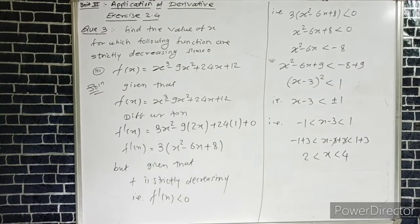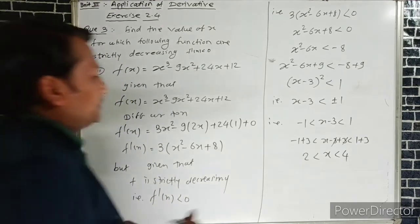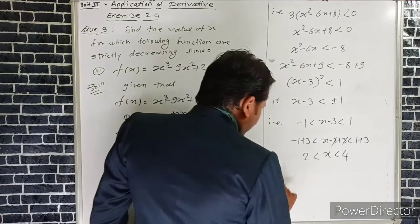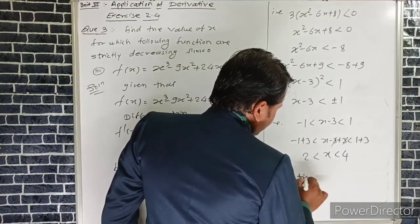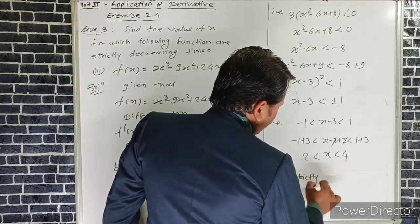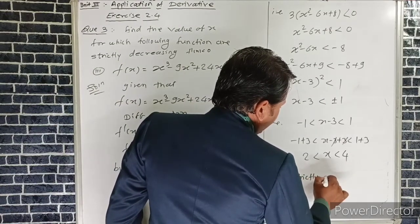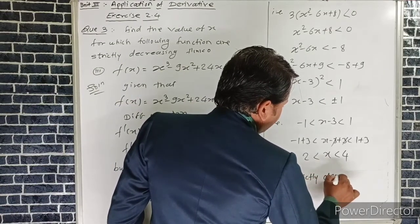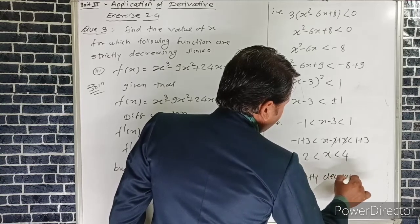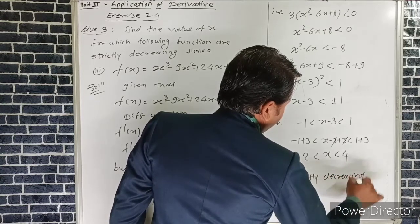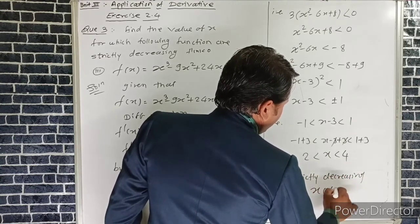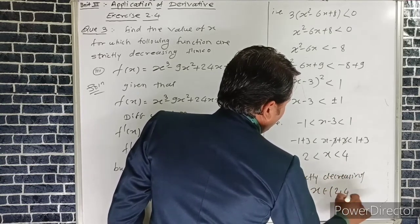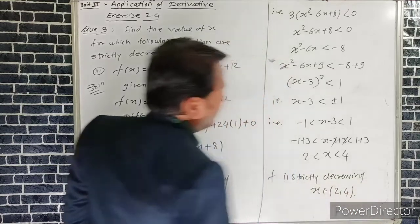So we can write f is strictly decreasing when x belongs to the interval (2, 4).